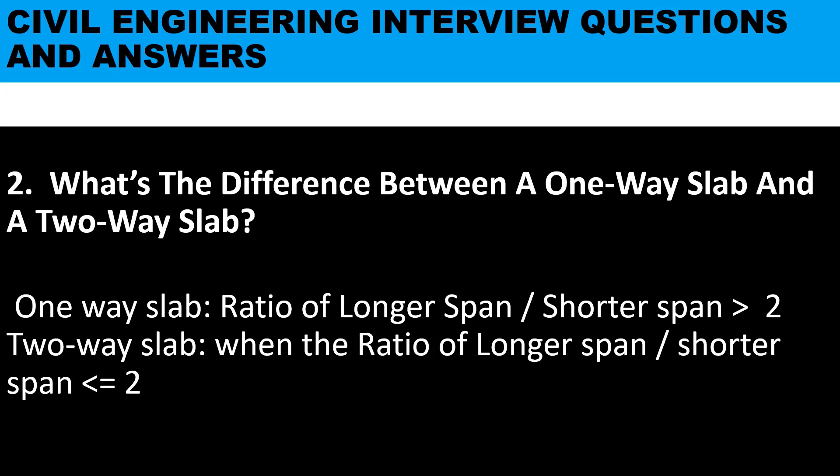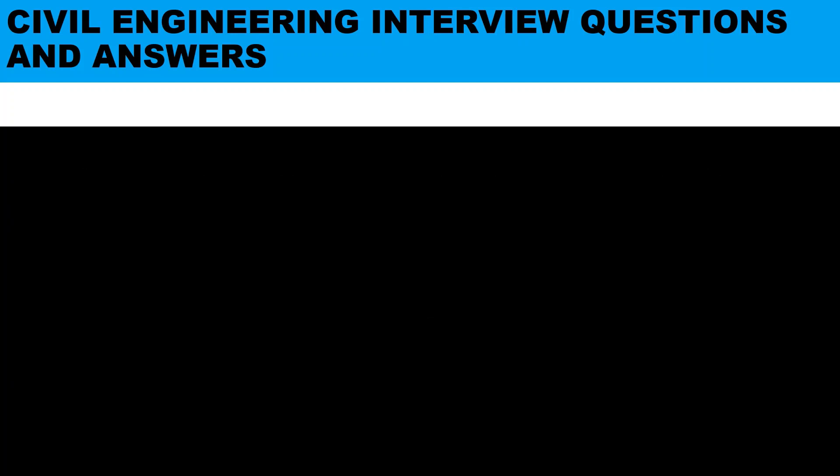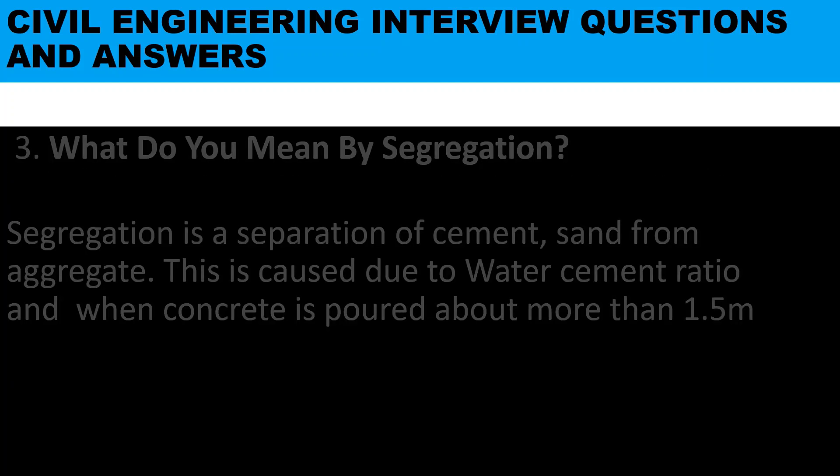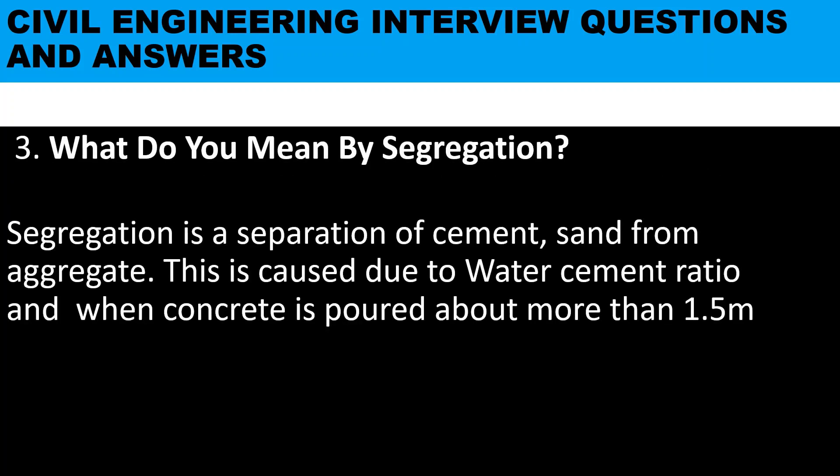Question two: what is the difference between a one-way slab and a two-way slab? A one-way slab is where the ratio of the longer span over the shorter span is less than two. A two-way slab is where the ratio of the longer span over the shorter span is more than or equal to two.